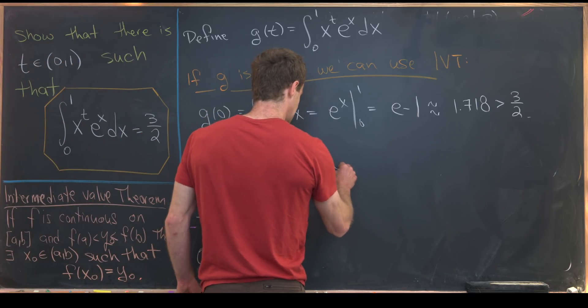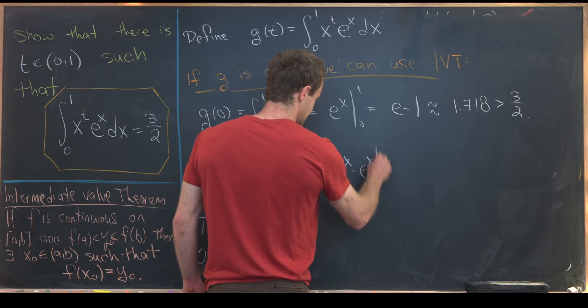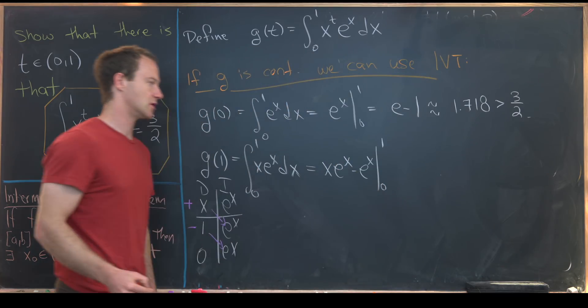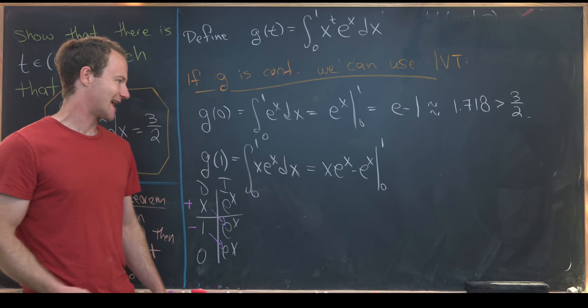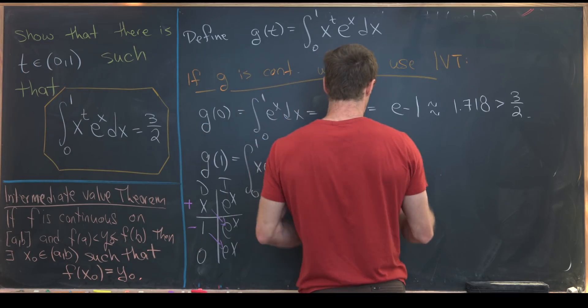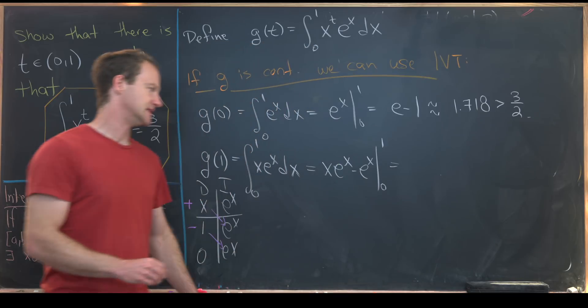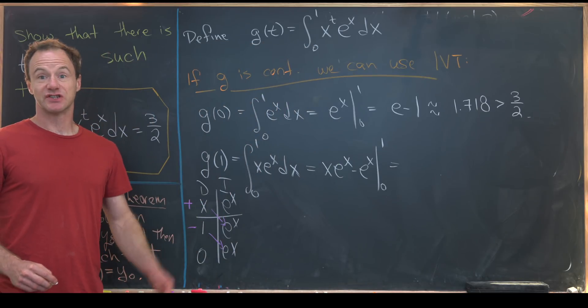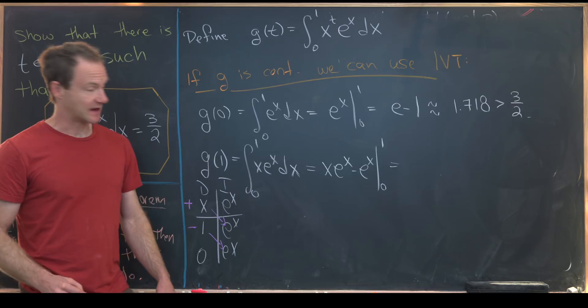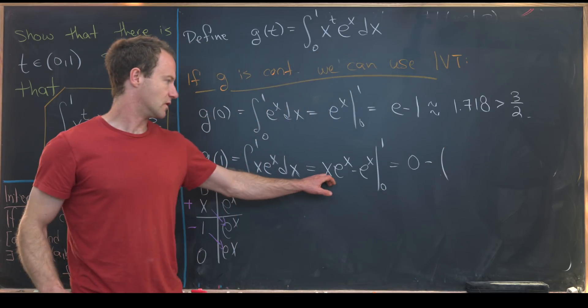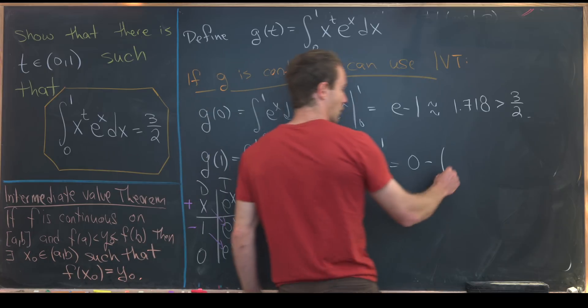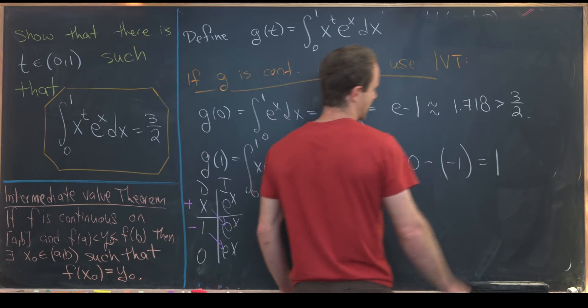So that quickly gives us our antiderivative. So this is x e to the x minus e to the x. We need to evaluate that from zero to one. Let's notice that if we evaluate this at one, we'll get e to the one minus e to the one, but that's just zero. So that cancels everything out. And then if we evaluate this at zero, we'll get zero minus one. So all in all, we'll get a one here.